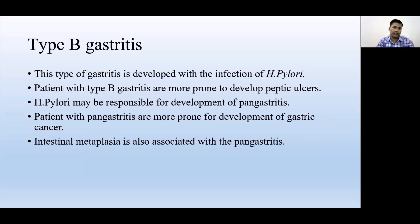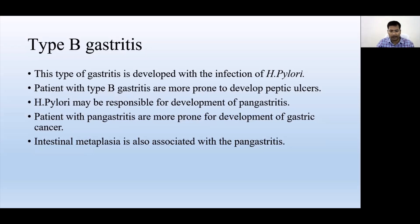The second type is Type B gastritis, which is the most common type of gastritis found. The positive factor behind it is infection with H. pylori — Helicobacter pylori — a bacterium that, after infecting the stomach, resides in the stomach lining and starts hypersecretion, leading to hypergastrinemia.